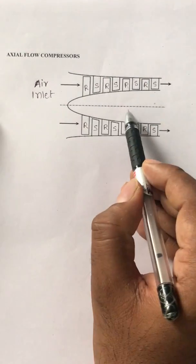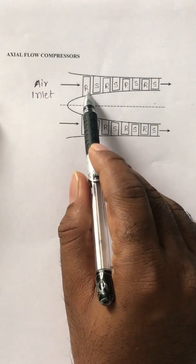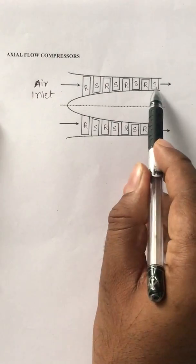air inlet and this is the rotor. The rotor has blades called rotor blades and they are rotating along with the rotor. And these are the stator blades, they are stationary.